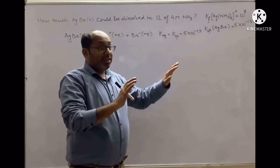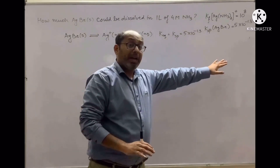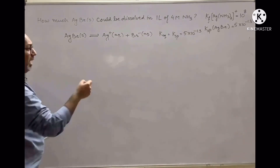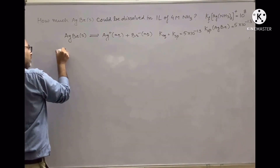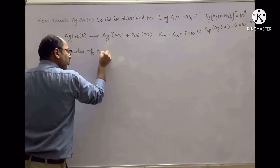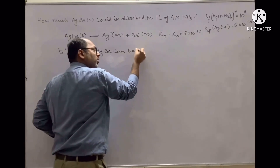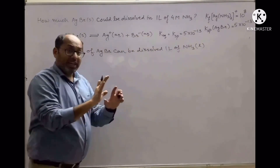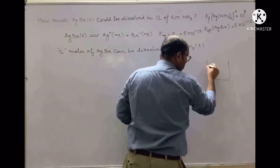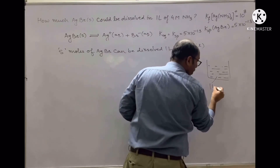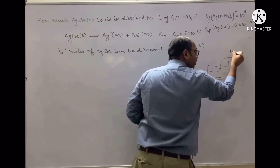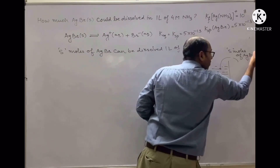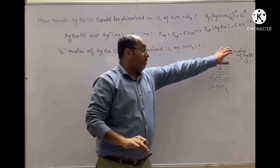Students really find this kind of problem difficult, but these are actually easy problems. If you really get it, you will crack your exam with a very decent rank. Let's look at the solution. Let us assume s moles of AgBr can be dissolved in one liter of ammonia solution.